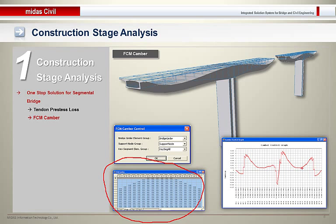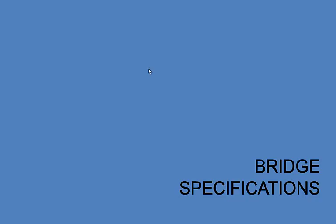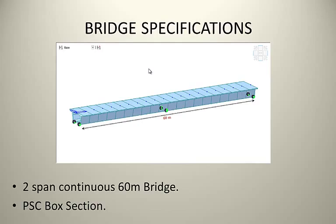Now we will discuss a small bridge for a precast example. The bridge specification is a two-span continuous 60-meter bridge, each span having 30 meters. The support conditions are simply supported, and we haven't modeled the piers — just taking pier supports for simplicity. The section type is a box section with M40 concrete.